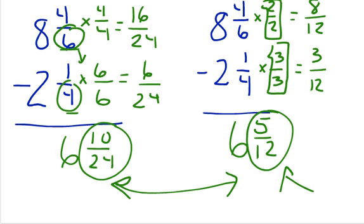So, that's the way you do subtracting mixed numbers with unlike denominators. So let's look at the steps.